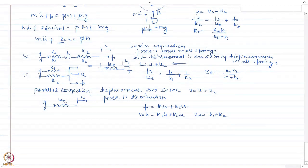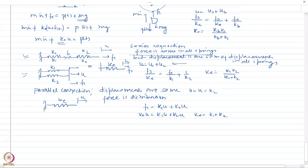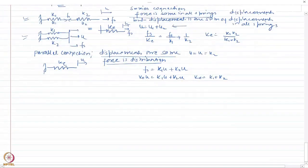What is important to remember: for a series connection, force is same in all the springs but the displacement is distributed among the springs. For a parallel connection, displacements are the same but the force is distributed. Using these two rules, you can determine if a connection is series or parallel, and for combined systems you can take two springs at a time and reduce to a simple equivalent system.